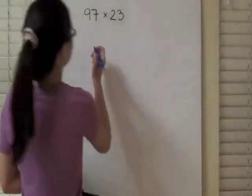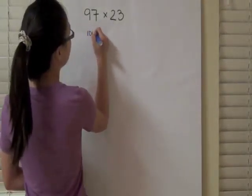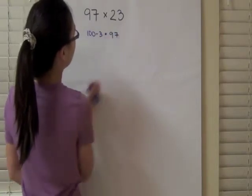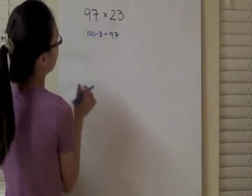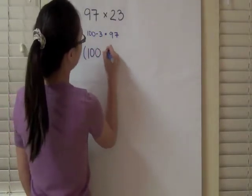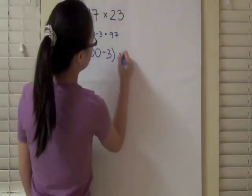For example here, 100 minus 3 equals 97. So instead of writing 97 times 23, you can write 100 minus 3 times 23.